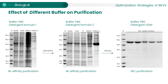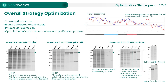Extraction of transmembrane proteins is difficult. Different membrane proteins have different detergent preferences. In this example, a single-pass transmembrane protein was expressed using the BEVS. The target protein was poorly extracted using detergent formula 1, and no purified protein was obtained. Optimizing the detergent formula enhanced protein extraction. Finally, DDM was used instead of detergent formula 2 to stabilize the final product. Sometimes optimizing a single condition doesn't work and we must optimize the overall strategy.